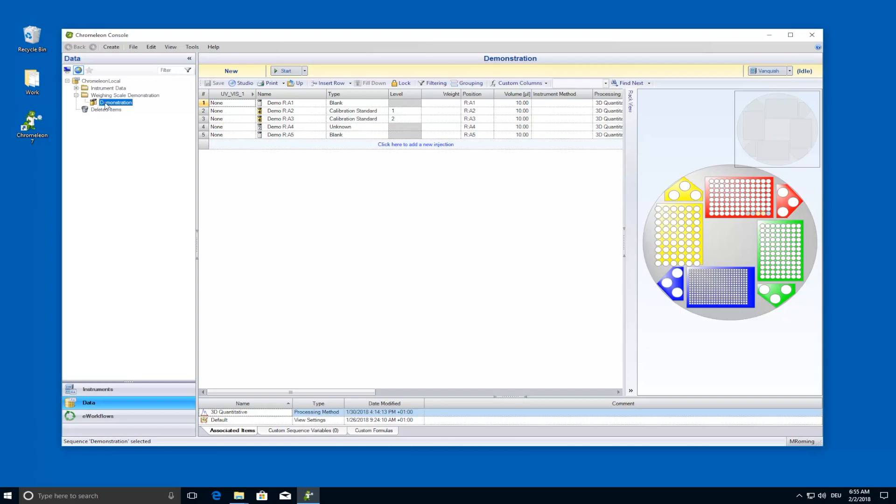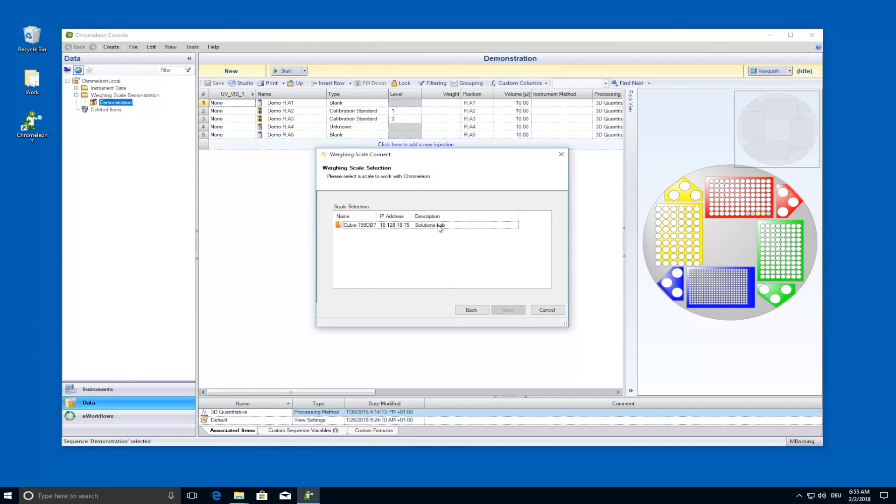Next, open the Weighing Wizard and select Send Weighing Input to Scale. You can then pick your preferred balance from the balances detected on your network. A single click now sends your sequence information to the balance.